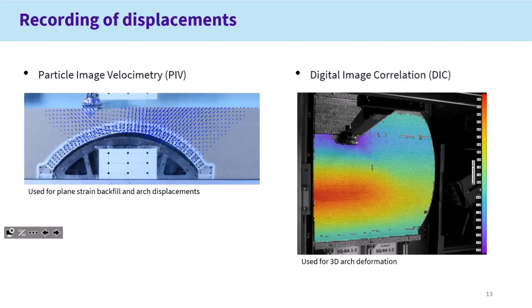In terms of measurements, we're using LVDTs, load cells, and such like. For our plane strain models, we're using PIV where we can monitor displacement of backfill and arches. And then for 3D arches, particularly the bare arches that we've been looking at initially, we're using DIC where we can establish three-dimensional movements in the arch.